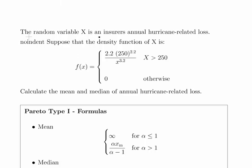The random variable X is an insurer's annual hurricane-related loss. Now that might give an actuarial student a clue that this might be a Pareto distribution, one of the two.